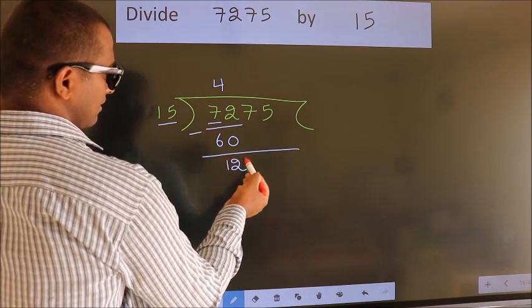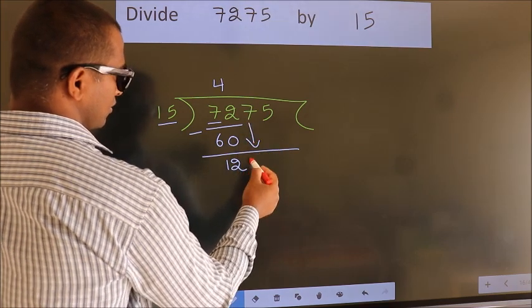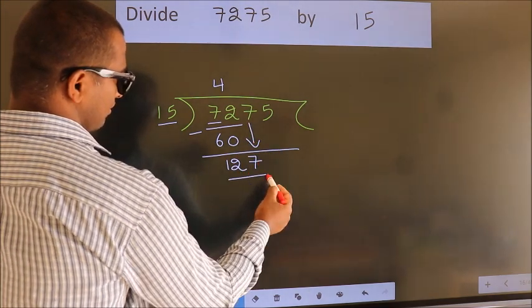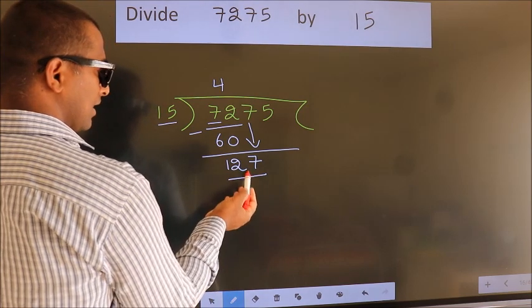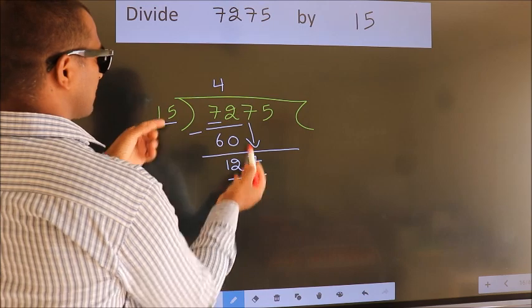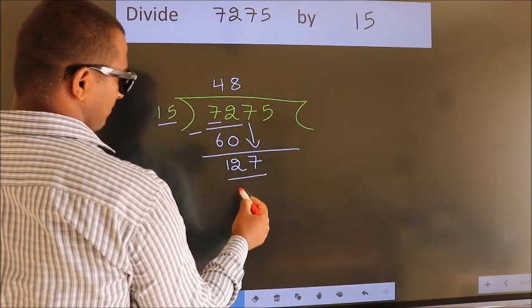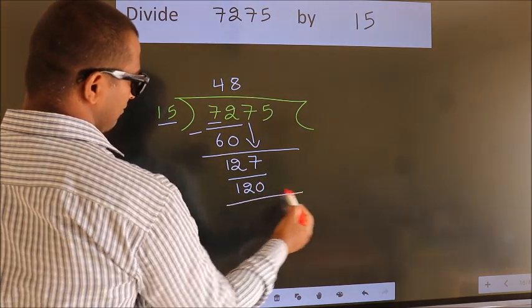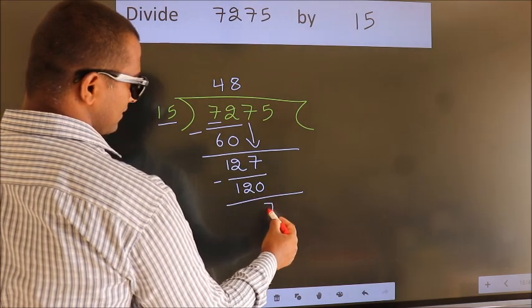After this, bring down the beside number. So 7 down. So 127. A number close to 127 in the 15 table is 15 eights, 120. Now we subtract. We get 7.